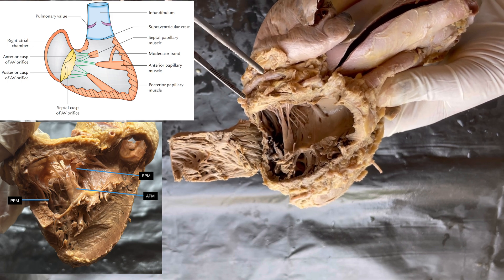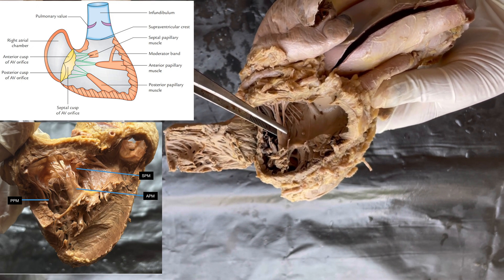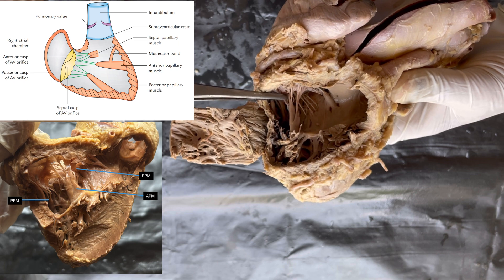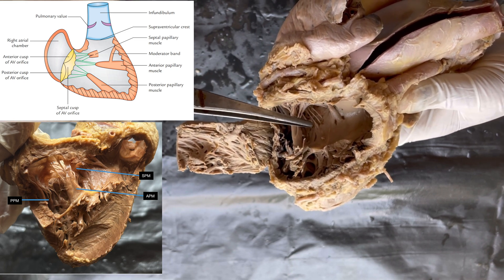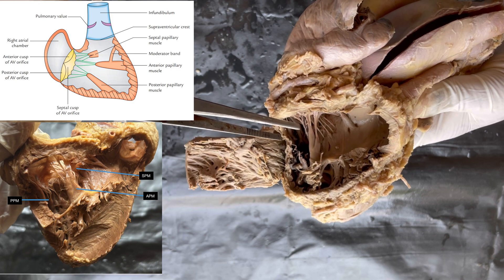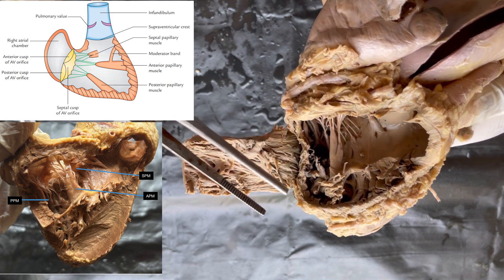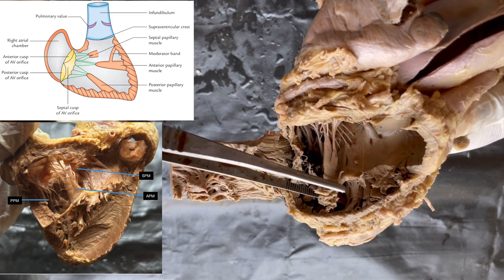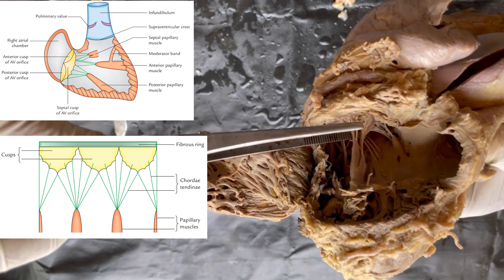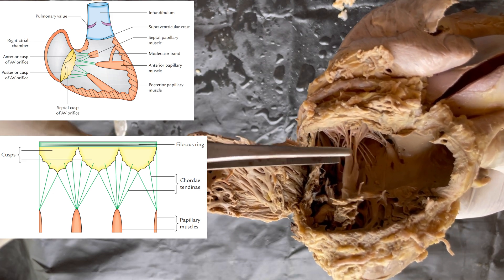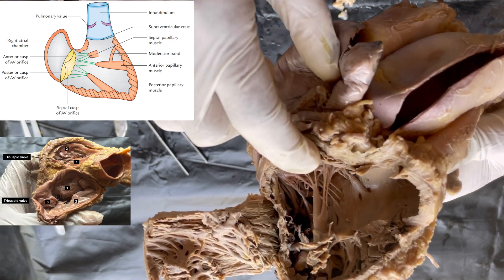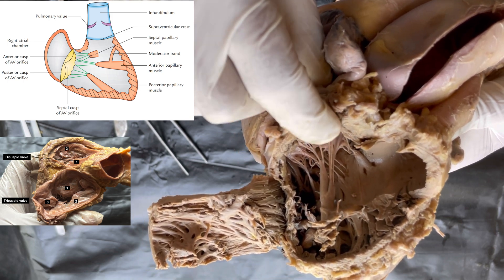The apex of the papillary muscles is attached via the chordae tendineae to the cusp. There are three papillary muscles: the anterior papillary muscle, which is the largest; just behind it is the posterior papillary muscle; and the septal papillary muscle, which looks like small nipples and is divided into two to three small parts. The anterior papillary muscle base is attached to the ventricular wall, and its apex is attached via the chordae tendineae to the cusp above. Since there are three papillary muscles, three cusps are present.